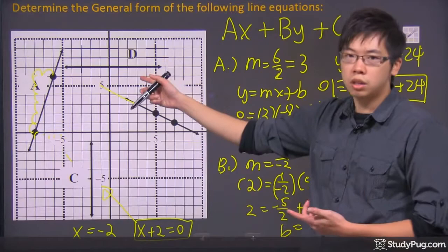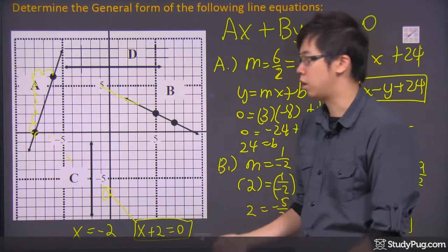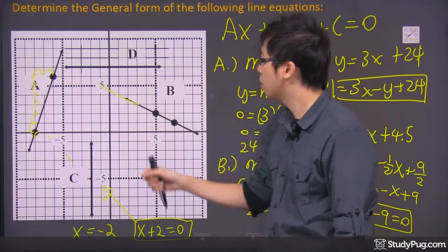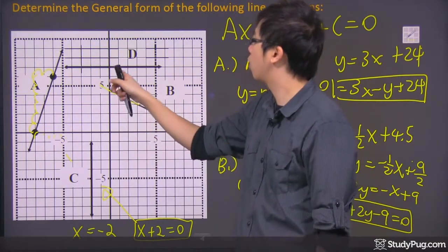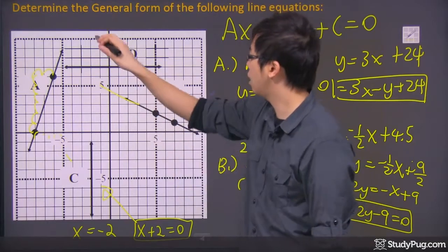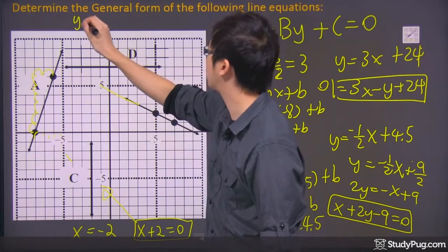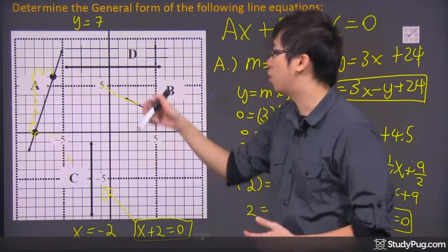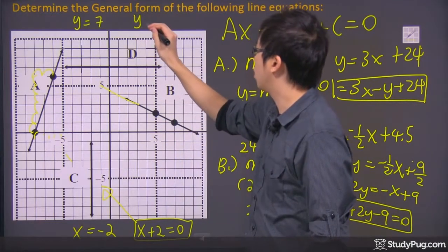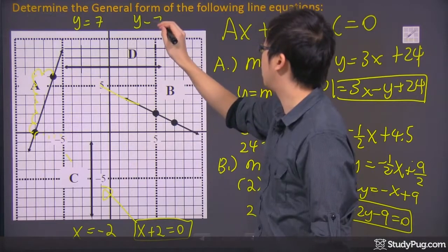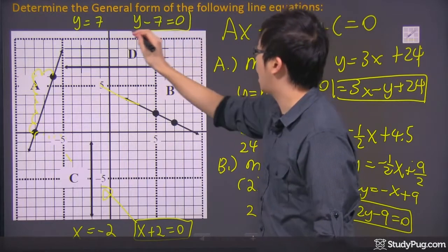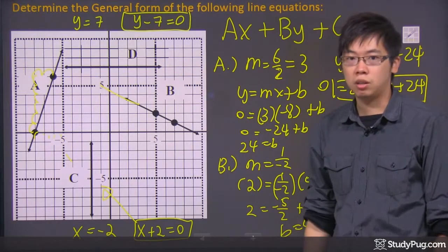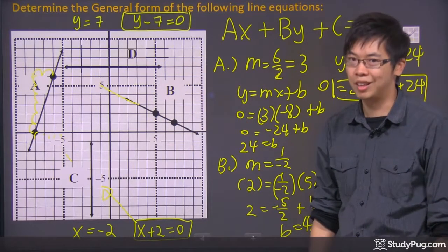Now if you're going to do the D, it's actually another way to look at it. It's just a straight line, a horizontal line on the Y axis. And where is it? It's on somewhere around the 7. So that is just saying that it's Y equals to 7, right? If you want to change that into the standard form, we're just going to put a Y here and put a minus 7 equals to 0. And that is the general form for that line number D right there. And that's it. Thanks for watching.